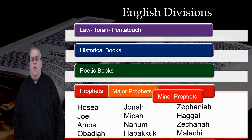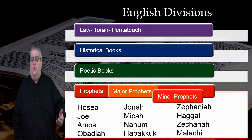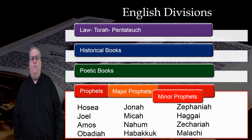And the minor prophets are Hosea, Joel, Amos, Obadiah, Jonah, Micah, Nahum, Habakkuk, Zephaniah, Haggai, Zechariah, and Malachi. These are all the books of the Old Testament in their respective divisions.